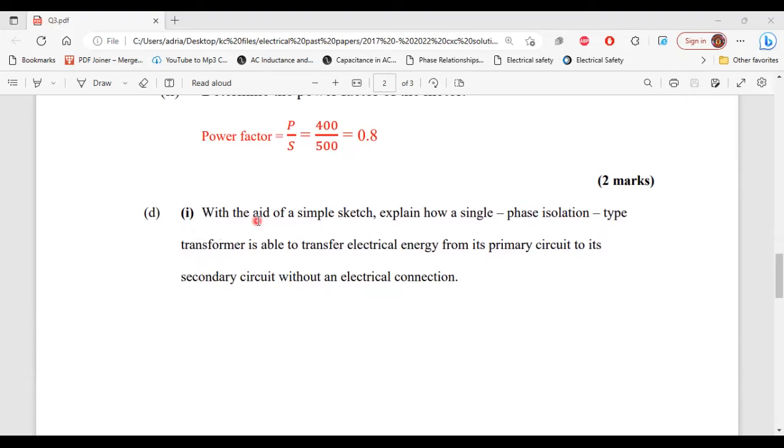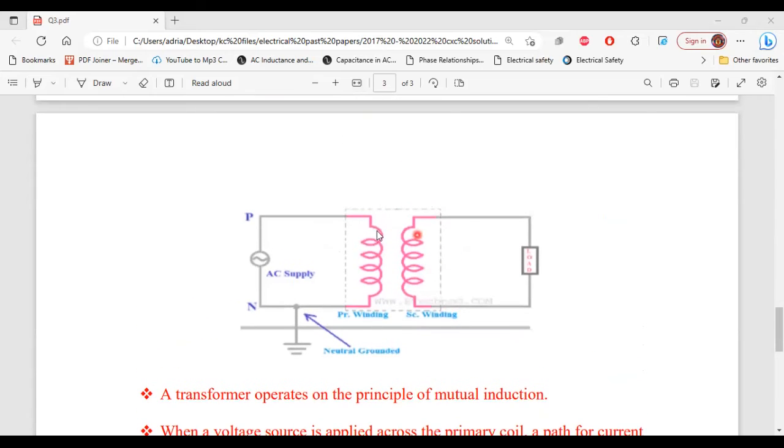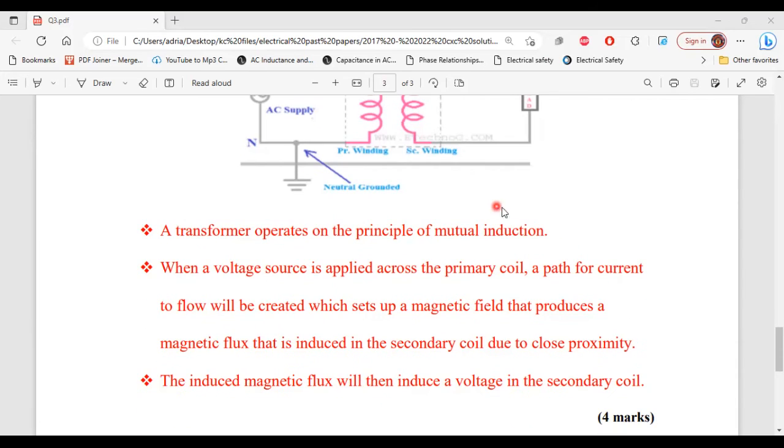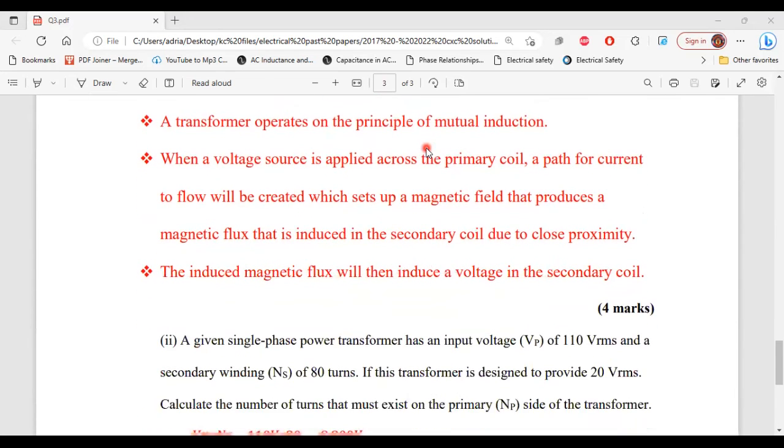Part one, it says with the aid of a simple sketch, explain how a single phase isolation type transformer is able to transfer electrical energy from its primary circuit to its secondary circuit without an electrical connection. All right. So here is the diagram of the transformer. And in terms of how it operates, the transformer operates off the principle of mutual induction. That is when a voltage source is applied across the primary coil, a path of current to flow will be created, which sets up a magnetic field that produces a magnetic flux that induces an EMF in the secondary coil due to close proximity. So that's how this transformer will operate. All right. So that's it for part one.